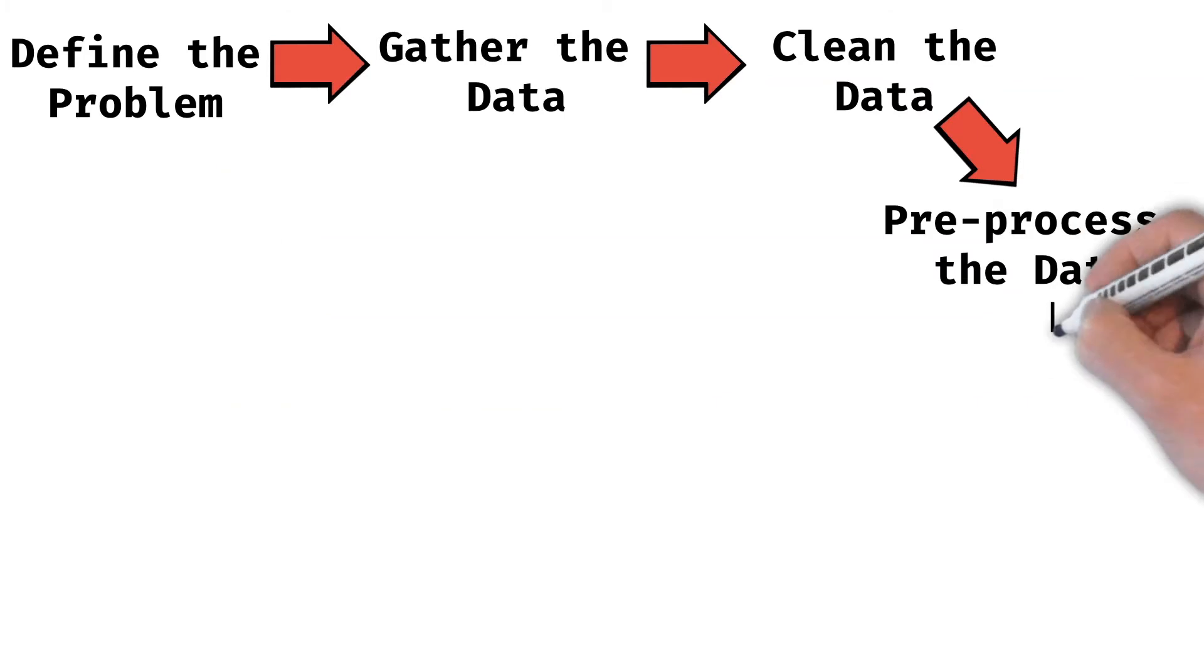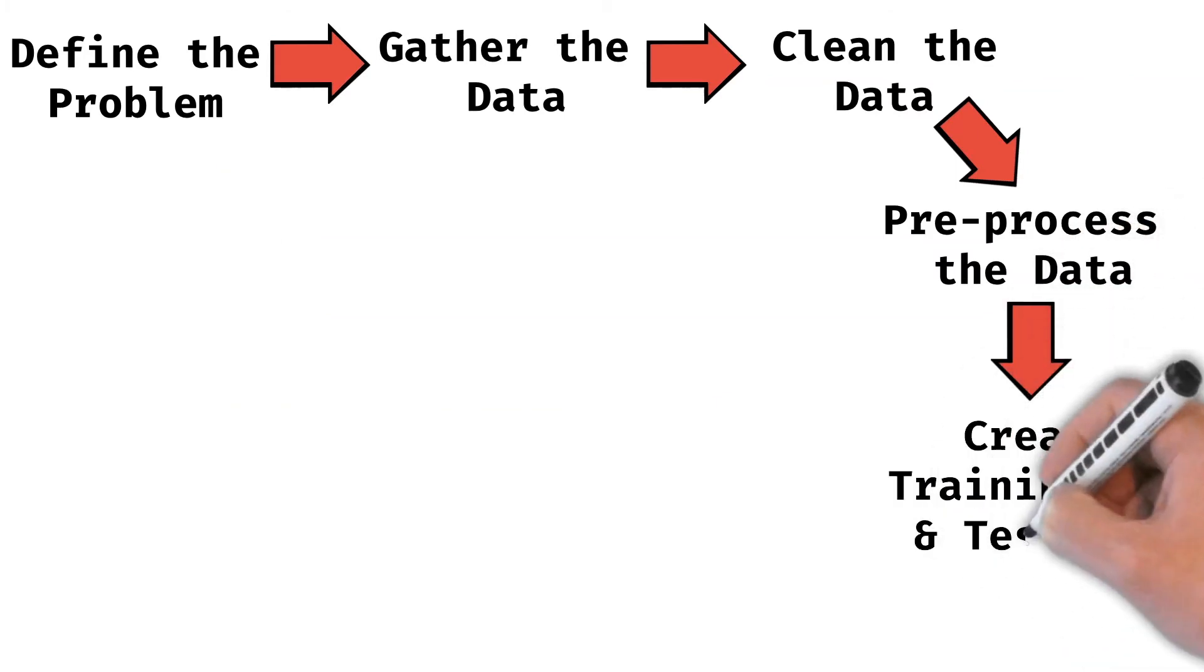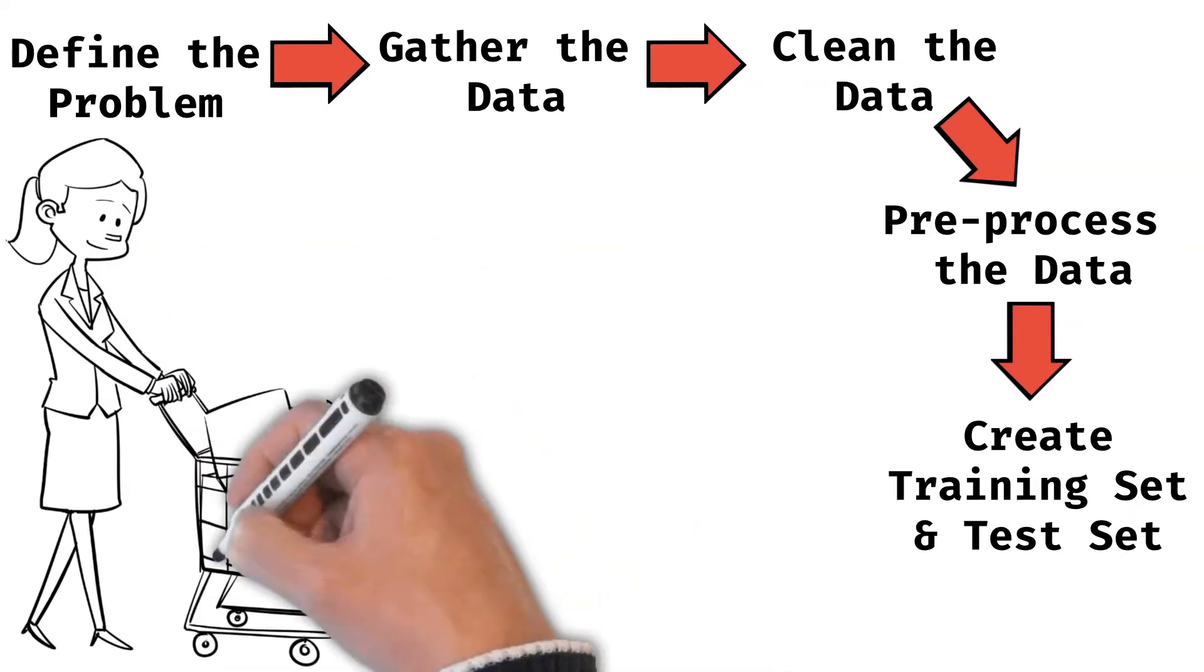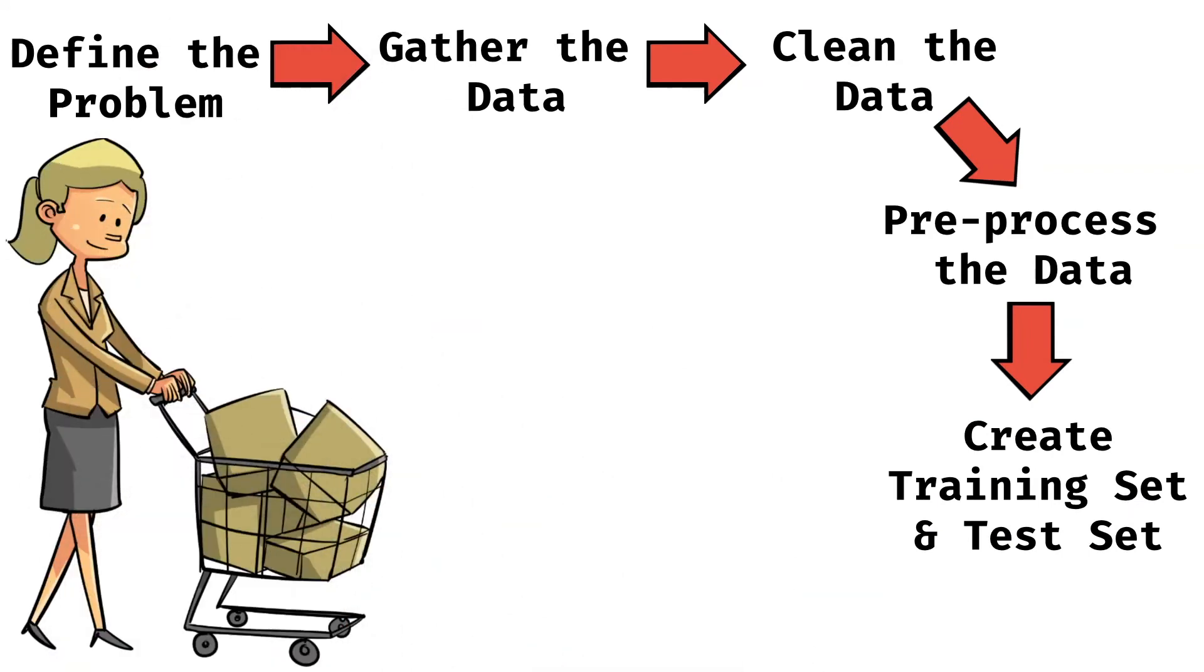Once we have the data ready for creating the model, we will have to create the training set and the test set. Now, this is a very important step because we have to make critical decisions regarding how much data we want to keep for training and how much data we want to keep for testing. This decision is not very straightforward really. Supposing you have only 10,000 data points, then you may decide that 70% of the data will be kept for training and 30% of the data will be kept for testing.